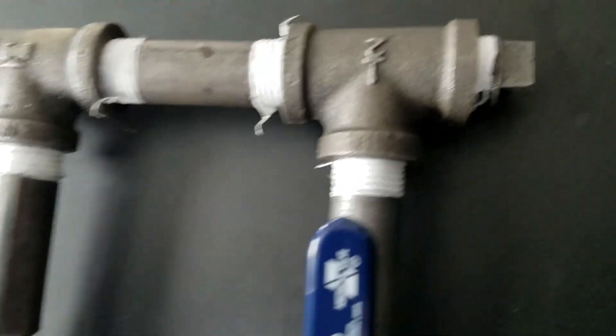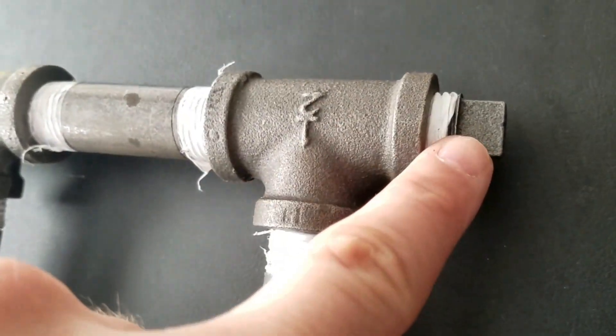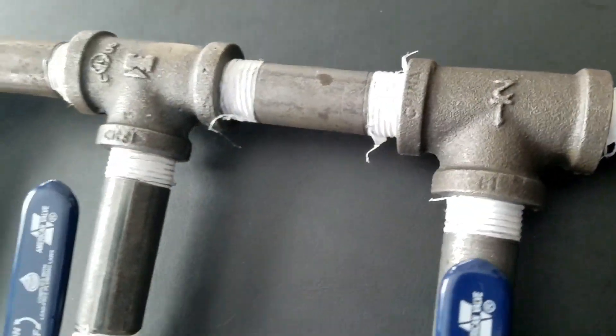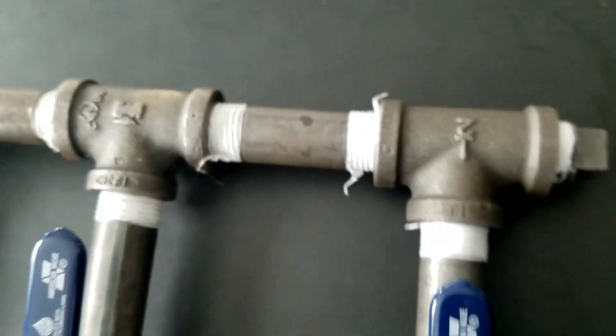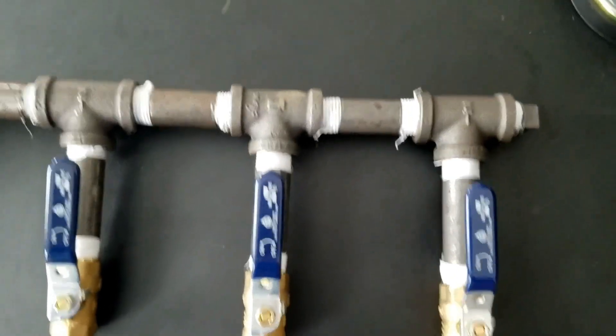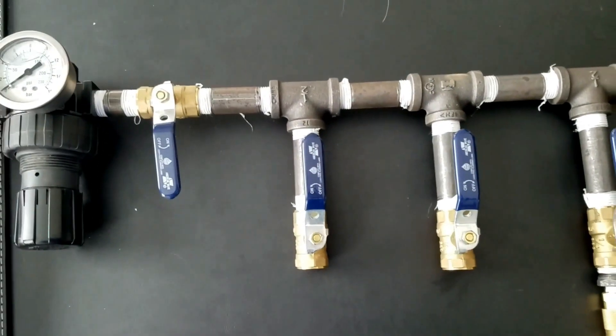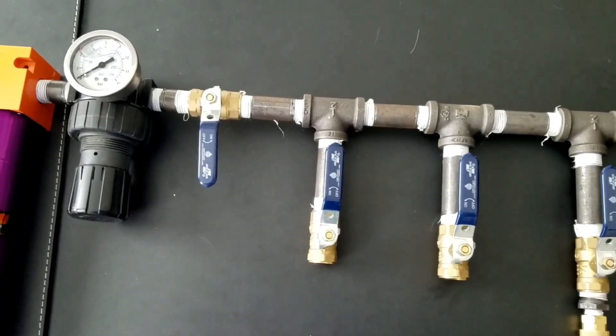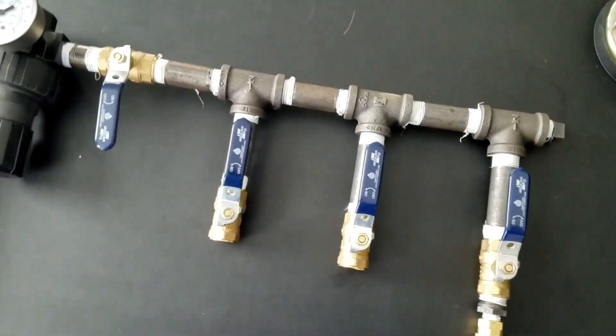Then we did it again here, except on this end you can see we put a plug on it, just to kind of stop it. You can probably do a 90 on this last piece if you wanted. We just did this if we needed to add on. So we run two air setups, two one-inch air pumps, and then also if you want to fill up tires or anything like that.